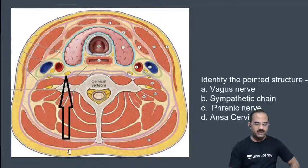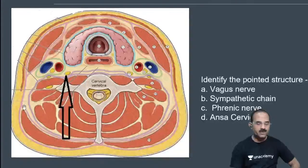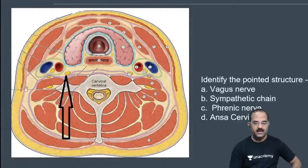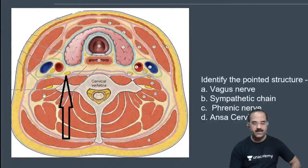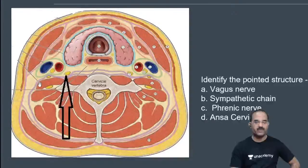Look, what is this here? This is the trapezius, and that's the sternocleidomastoid. So what is this area? This is the posterior triangle of the neck. These muscles form the floor of the posterior triangle of the neck, and the floor is covered by the pre-vertebral fascia.